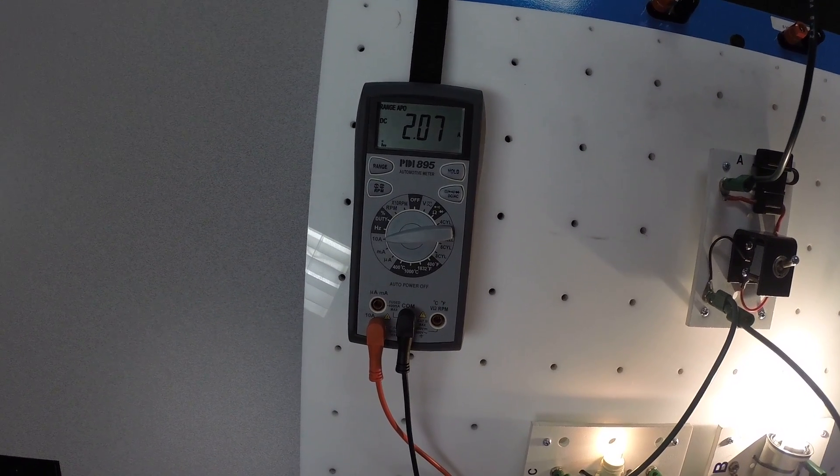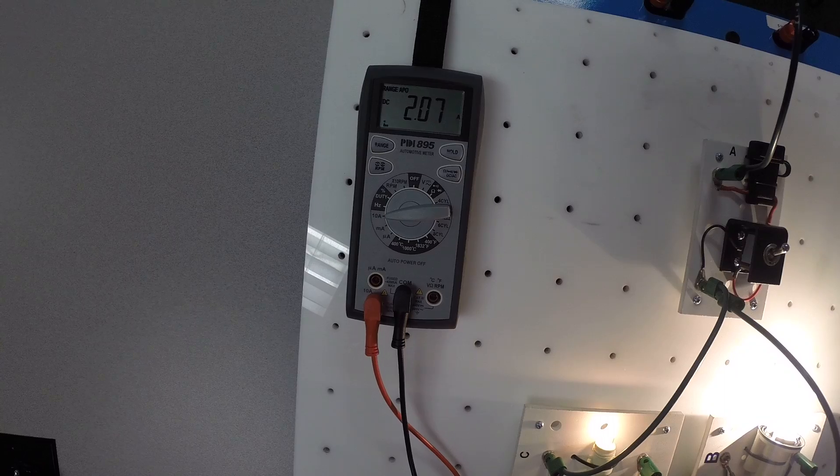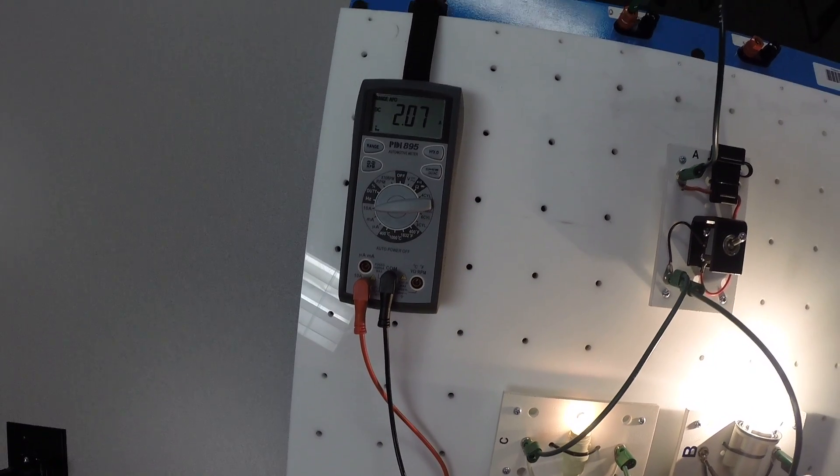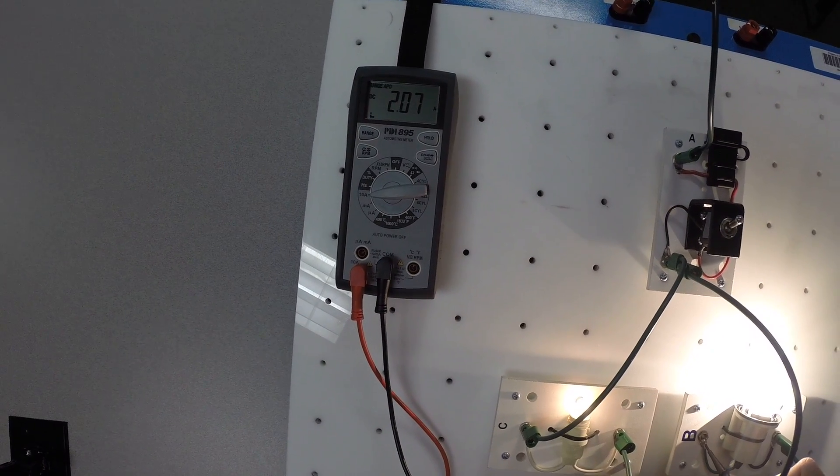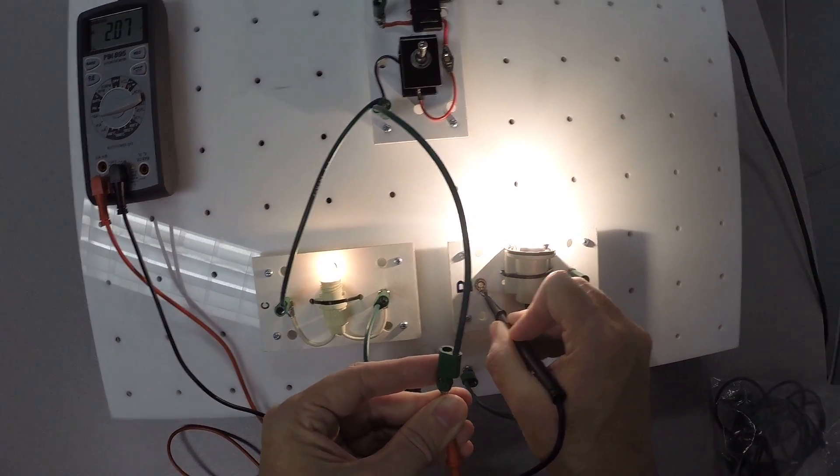We have 2 amps because we have less resistance. There's less resistance in that brighter bulb. More current can flow. The bulb illuminates more brightly. So, 2 amps, roughly, versus a quarter amp, roughly, from the small bulb.